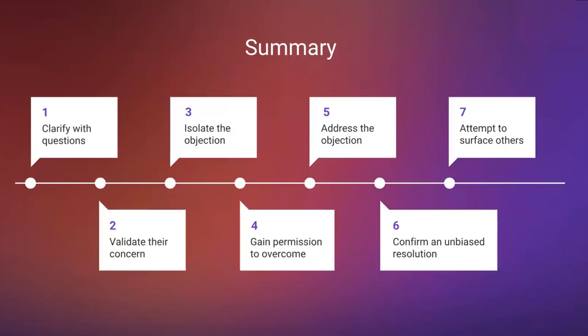Step two: validate their concern. 'That's a completely valid concern. It seems like you want to make sure you have the best quarter possible.' Pause — she says 'Yeah, of course, that's kind of my job.' Step three: isolate the objection. 'If we truly overcame that concern — if we waited until the end of the quarter — what else would prevent us from starting a pilot?' She responds: 'Nothing else. That's the big thing, we just need to close out the quarter.' Now that I've isolated the true objection, step four: gain permission. 'Do you mind if I bounce a few thoughts off of you?' — 'Sure.'